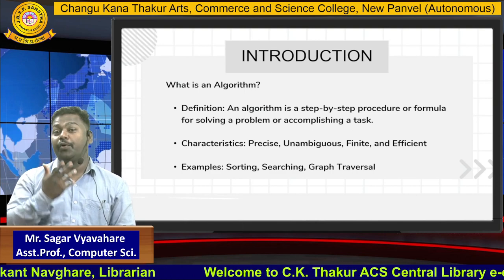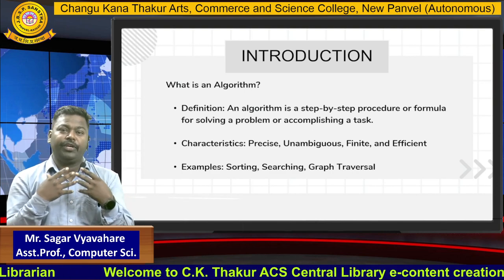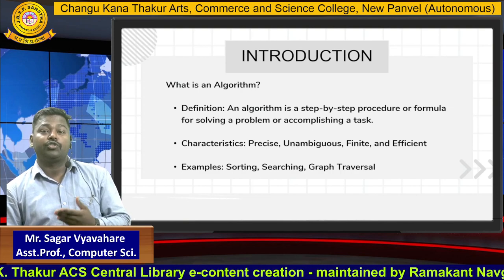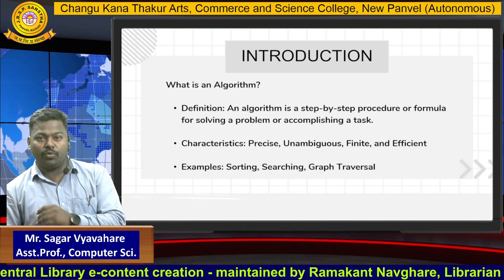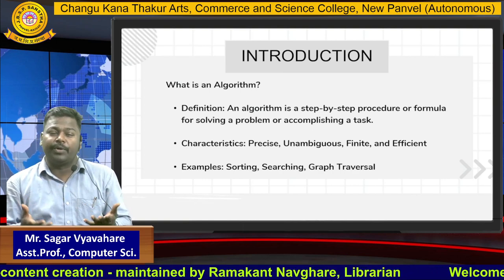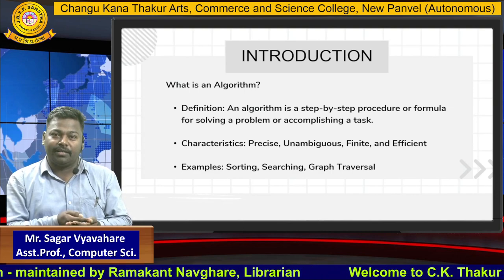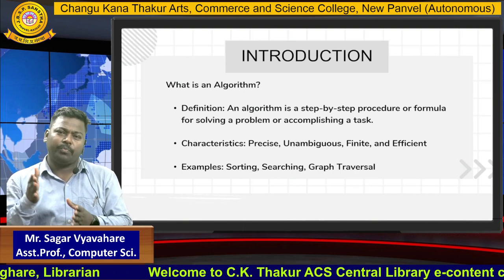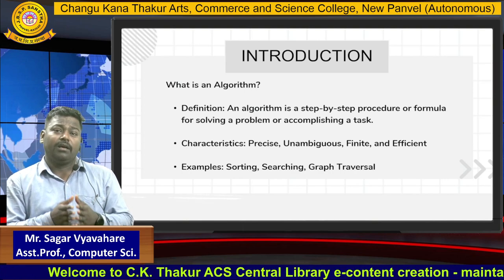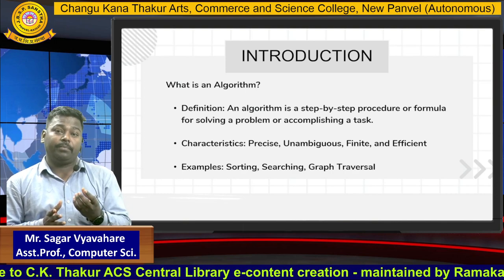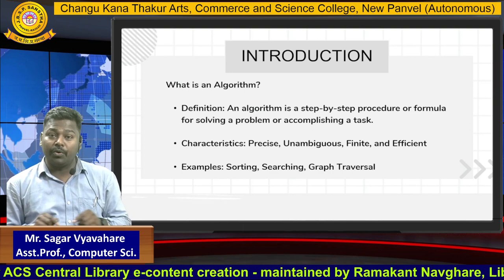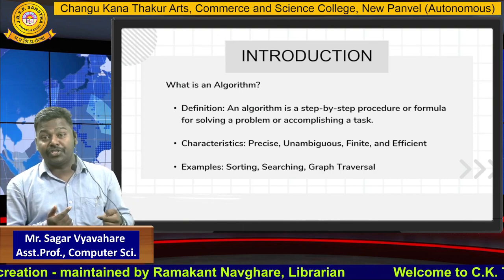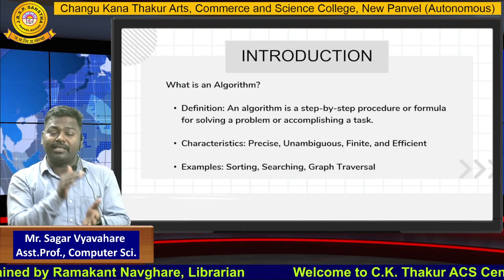First, let's see what algorithm means. By definition, an algorithm is a step-by-step procedure or formula for solving a problem or accomplishing a task. In real life, there are many things we do — for example, when making tea, there is a procedure: first take a pan, put water in it, then put sugar, milk, and so on. Likewise, in computer science, when we get a problem, we create an algorithm to solve it with step-by-step procedures.